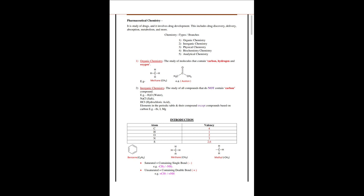There are different types of chemistry. The first is organic chemistry, the second is inorganic chemistry, the third is physical chemistry, the fourth is biochemistry, and the fifth is analytical chemistry.